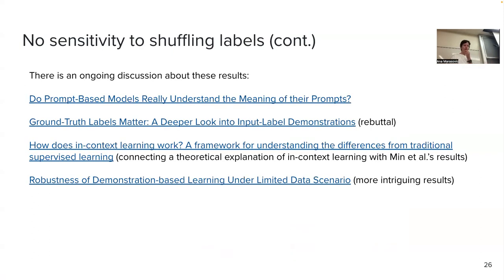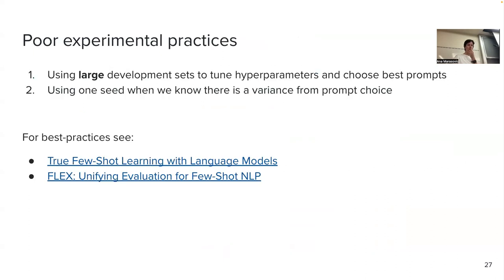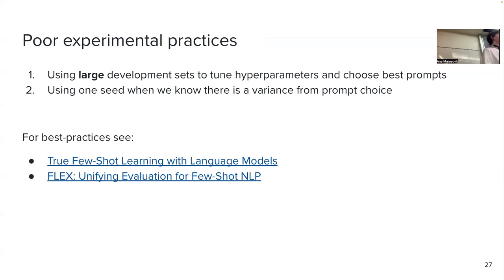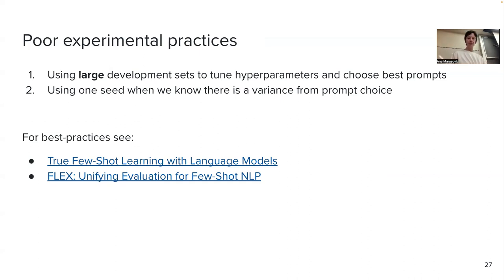There are a lot of poor experimental practices, at least when prompting started in 2020. People would say I'm going to use only a few training examples, but then to find hyperparameters they use the entire development set. Is that really a few-shot setting if you're doing model selection with thousands of instances? Not really — but just because few-shot is described as using only few training examples, people mentally forget they shouldn't be choosing models using a ton of examples either.